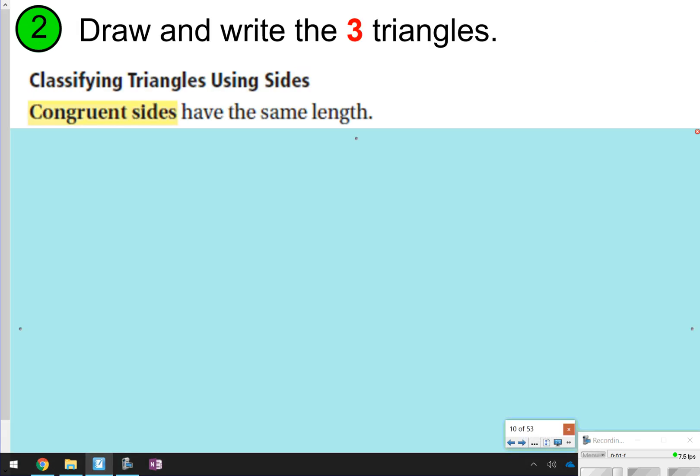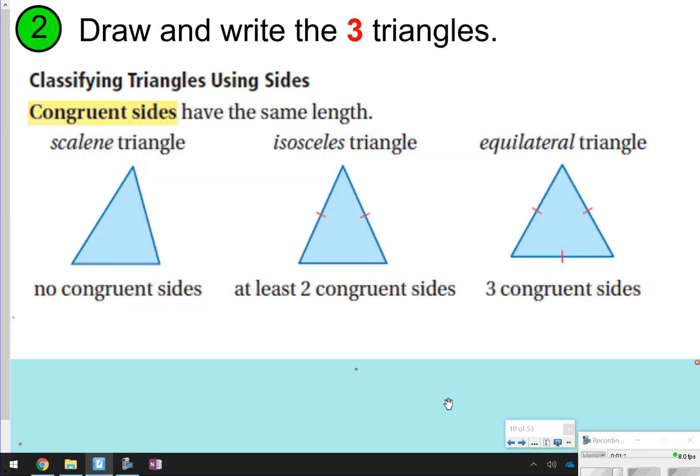The next three we're going to look at are how to figure out triangles and classify them using their sides. A scalene triangle has no congruent sides. Isosceles triangles have two congruent sides, and an equilateral triangle has all three congruent sides. The tick marks show that these two sides are equal.